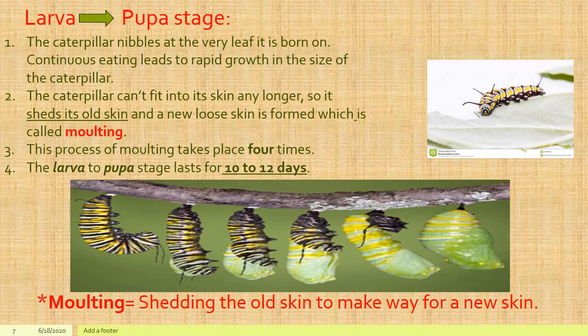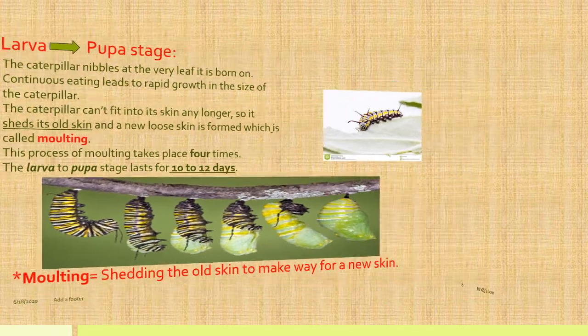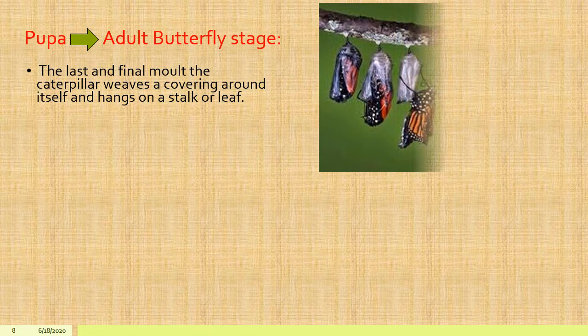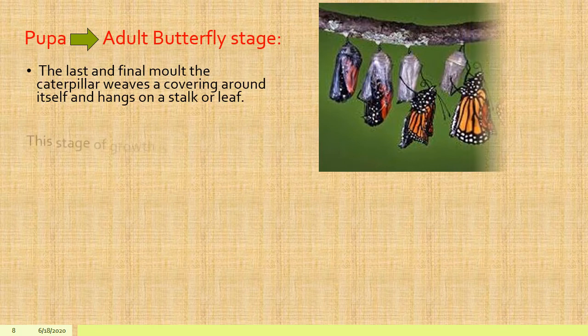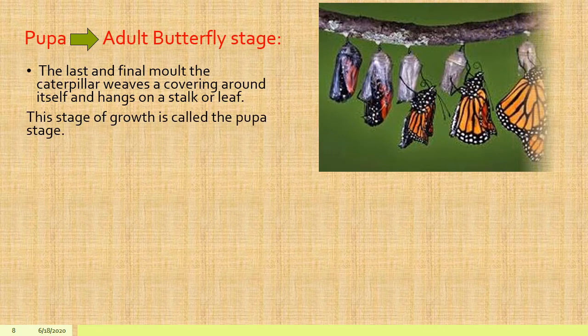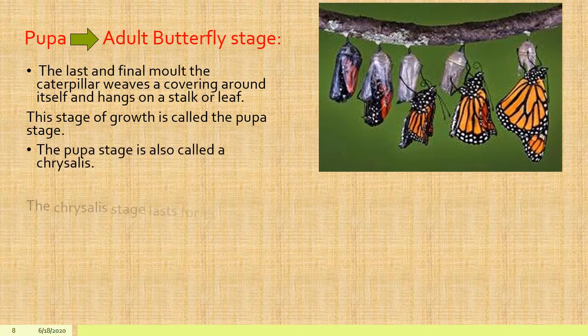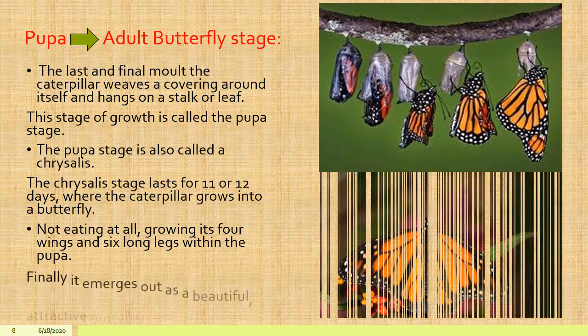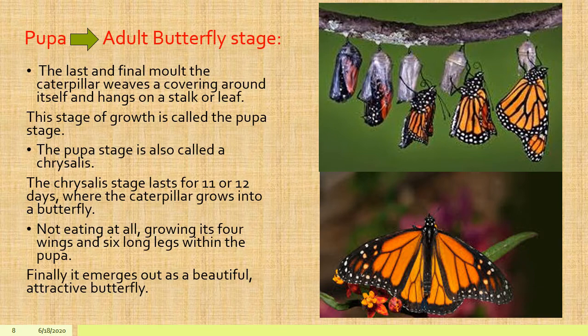The caterpillar sheds its skin four times. This shedding of old skin to make way for a new skin is called molting. The stage from the larva to the pupa lasts for ten to twelve days. During the last and final molt, the caterpillar weaves a covering around itself and hangs from a leaf or a stalk of a branch. This stage of growth is called the pupa stage, also called a chrysalis. The chrysalis lasts for eleven or twelve days, and within the chrysalis, the caterpillar grows its six legs and four wings, and in the end it emerges out as a beautiful, attractive butterfly.